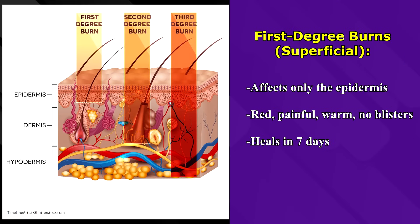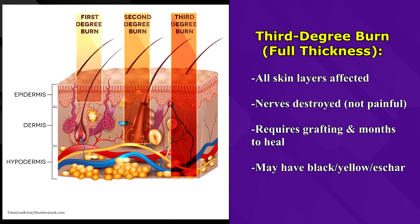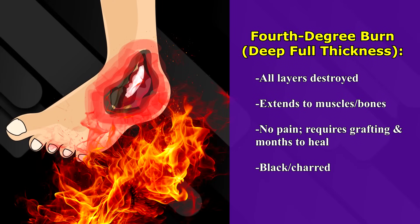With a first degree burn, it's superficial, affects only the epidermis, is red, painful, and warm with no blisters, and typically heals in seven days. Second degree burns, also known as partial thickness, affect the epidermis and dermis — they can be painful, have blisters, be red and swollen, and may need grafting if severe. Third degree burns, or full thickness, affect all skin layers; the nerves are destroyed making them less painful, require grafting, take months to heal, and may appear black, yellow, or have eschar. Fourth degree burns, or deep full thickness, destroy all layers extending to muscle and bone, have no pain, appear black or charred, and require months of healing and grafting.